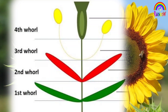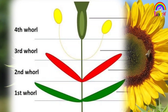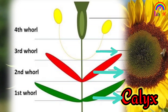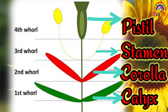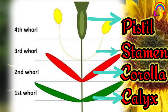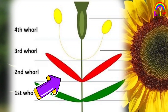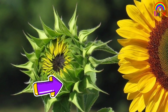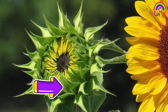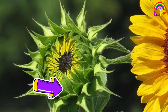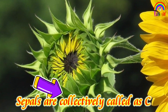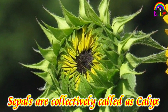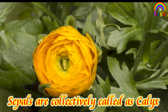A typical flower has four main parts or whorls known as calyx, corolla, stamen and pistil. The outermost whorl of the flower has a green leafy structure known as sepals. Sepals are collectively called as calyx. It protects the unopened bud.